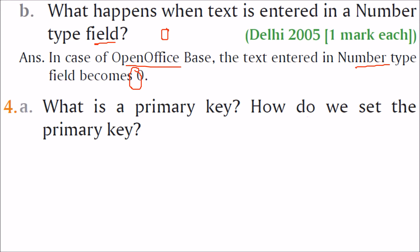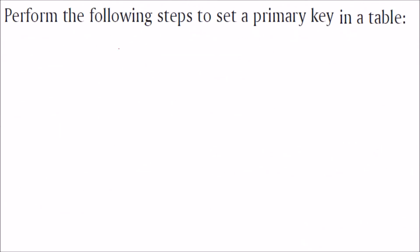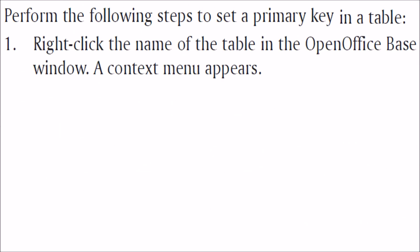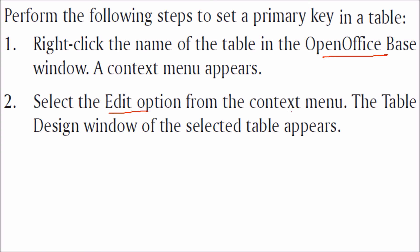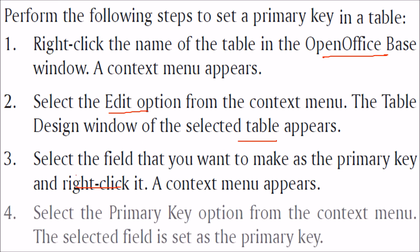What is the primary key and how do we set it? The primary key is that key or combination of keys that uniquely identifies your record — it cannot have duplicate entries and must be unique. To set it: right-click on the table name in the Open Office Base window, select Edit from the context menu, then in the table design window select the field you want as the primary key, right-click it, select the Primary Key option from the context menu, and the selected field is set as the primary key.